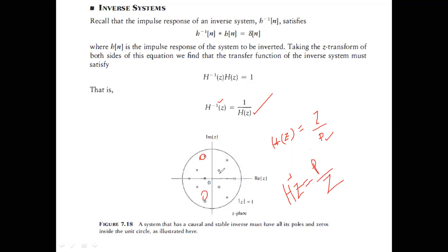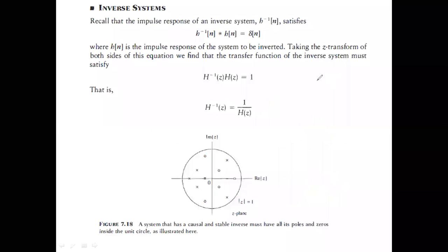If all zeros of H(z) lie inside the unit circle, then the poles of H⁻¹(z) are inside the unit circle, so the inverse system is also stable. This leads to the concept of a minimum phase system: a system where all poles AND zeros lie inside the unit circle, so that both the system and its inverse are stable.